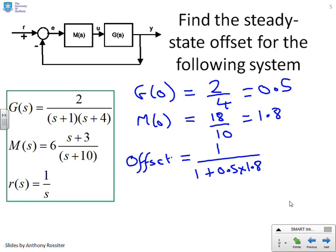Again, the magnitude of the target is 1. So I don't need the A. So this is going to give me 1 over 1.9. Okay. So you see, in this case, the offset is getting pretty close to 50%, which is a huge offset.